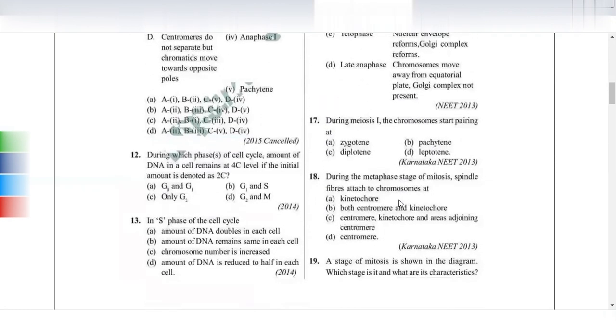A stage of cell division is shown in the figure. Pictures are very important in questions. Looking at this picture, we can identify it as telophase because the endoplasmic reticulum, nucleolus, nuclear envelope, and Golgi complex are reformed. Option C is right. During meiosis I, chromosome pairing starts in zygotene where bivalent or tetrad forms. During metaphase stage of mitosis, spindle fibers attach only to the kinetochore, not directly to the centromere.